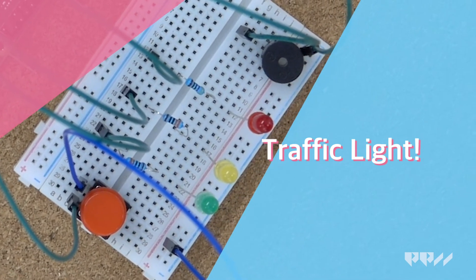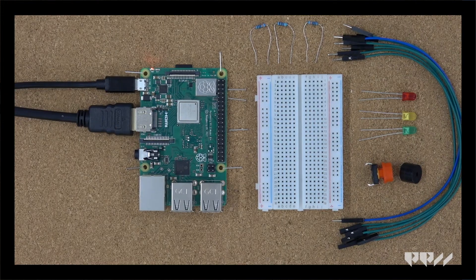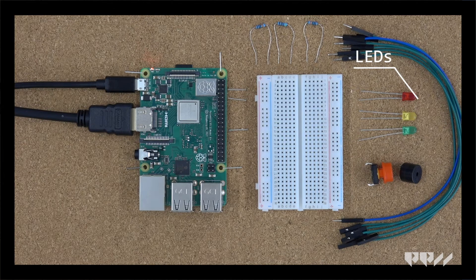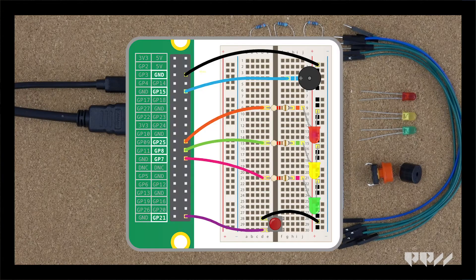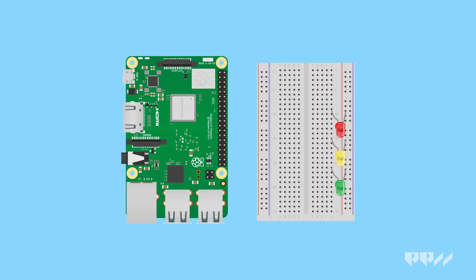Traffic light. One of the standard projects used when teaching Python on a Raspberry Pi is the traffic light project. This uses three LEDs, a button, and a buzzer. We are going to combine all three for one small project. First, we need to wire our components to the breadboard. Check the diagram below. Place the LEDs in the breadboard with the short legs, negative, in the positive rail on the breadboard. Notice the color order of the LEDs in the diagram.